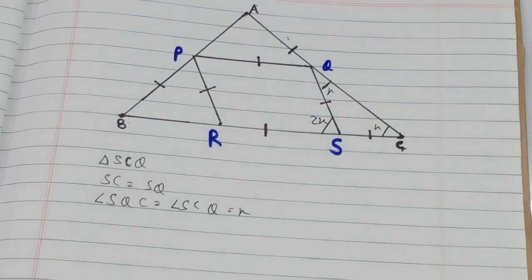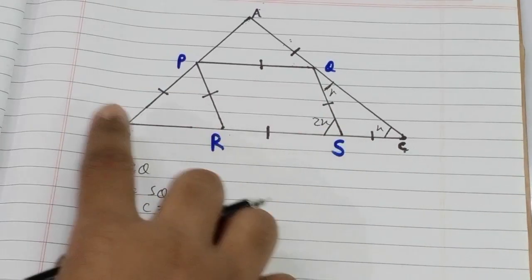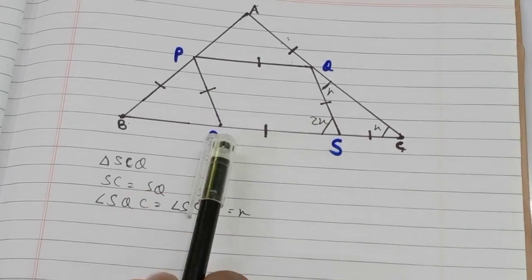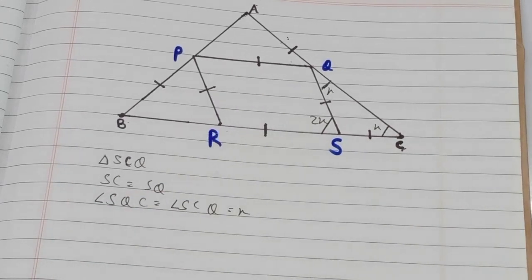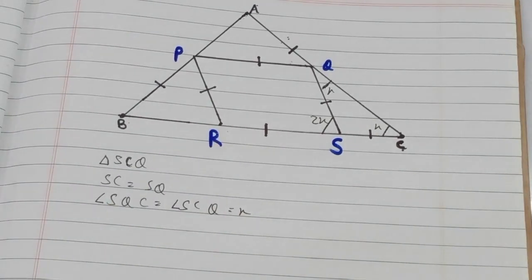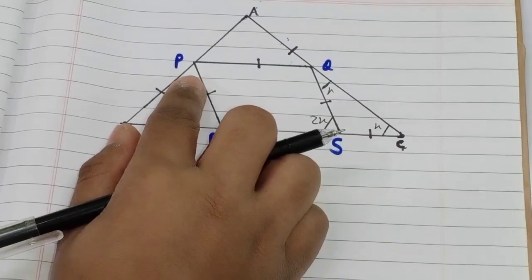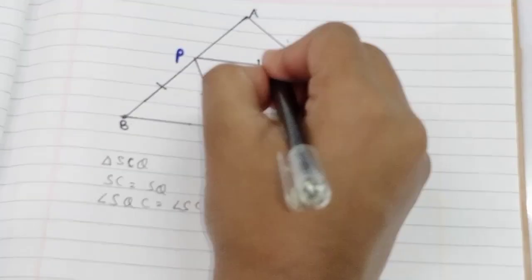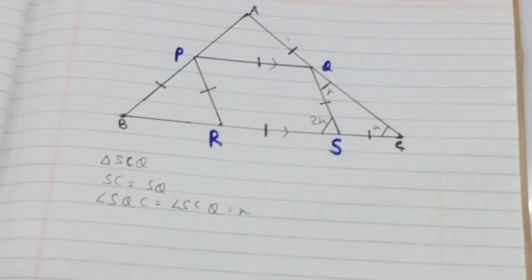Now let's talk about quadrilateral PQRS. We can see that all of its sides are equal, which means it is a rhombus. In a rhombus, opposite sides are parallel, so PQ is parallel to RS.